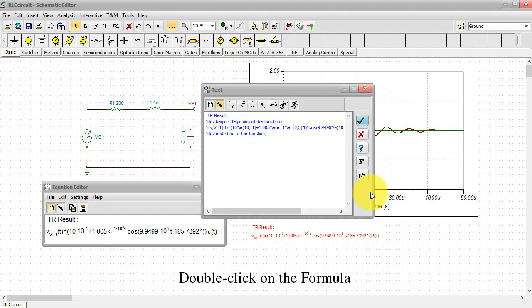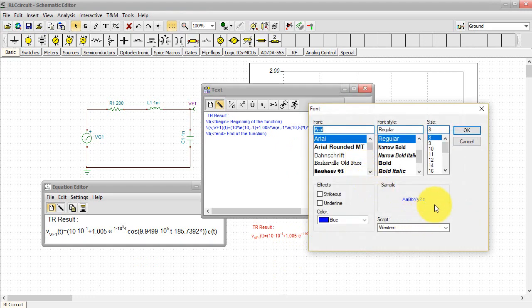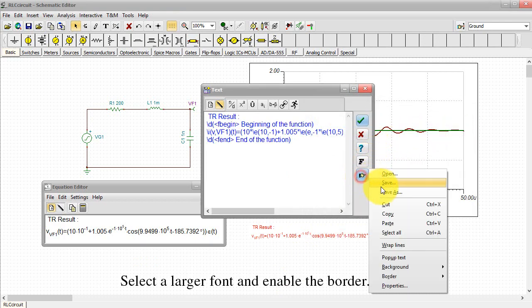Double-click on the formula and in the Text Editor window, press the F Font button. Select a larger font and enable the border.